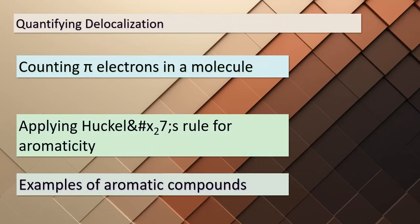Today's lesson wouldn't be complete without diving into the quantitative aspects of delocalization. How do we count those pi electrons in a molecule's extended pi system? We turn to Hückel's rule, a valuable tool for determining aromaticity. According to this rule, a molecule with 4n + 2 pi electrons is aromatic, where n is an integer. For instance, benzene with its 6 pi electrons, n = 1, falls under this rule. As we explore examples of aromatic compounds, you'll see how this rule helps us understand and predict the behavior of these fascinating molecules.